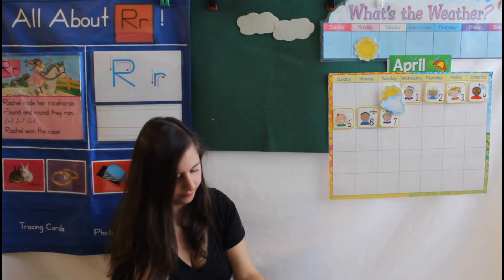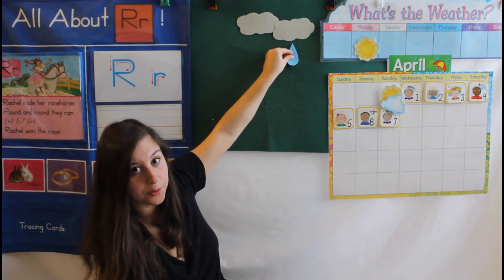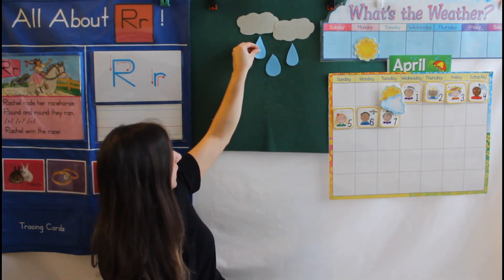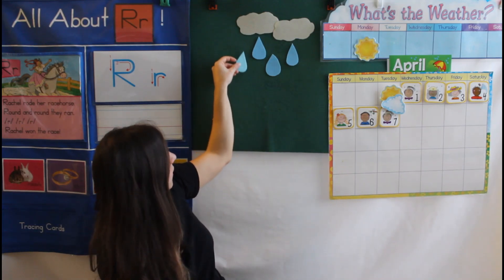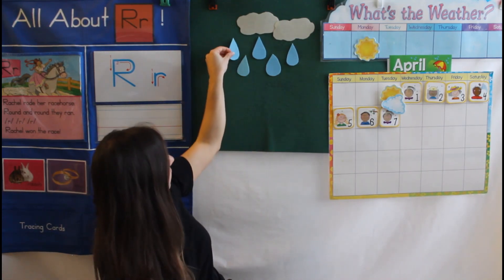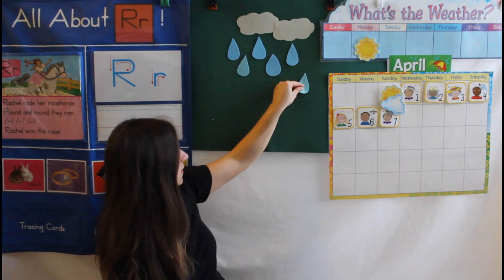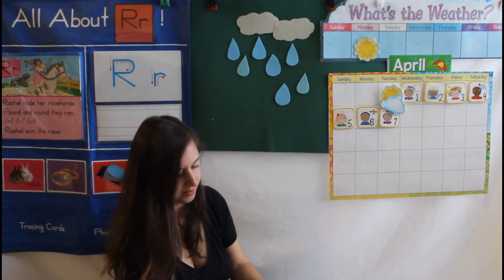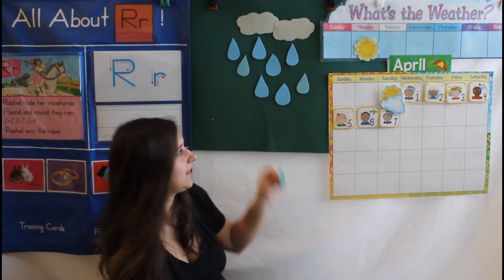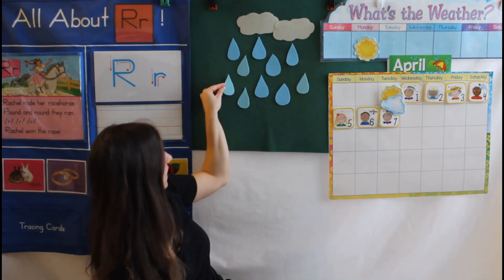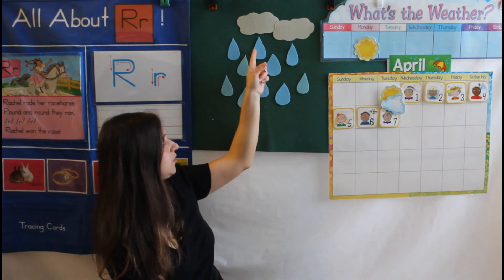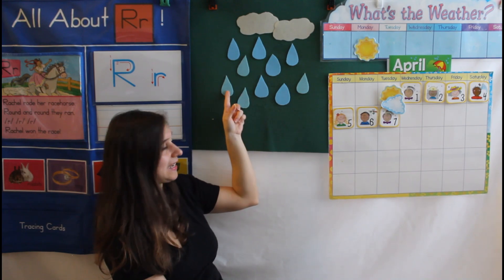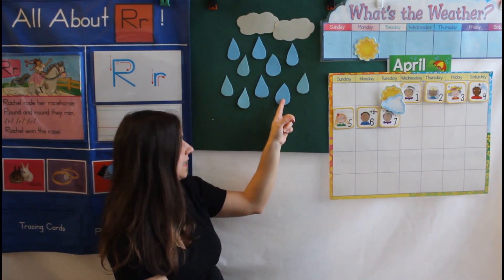Let's see how many raindrops we have all together. Are you ready? Let's count together. One, two, three, four, five, six, seven, eight, nine, ten. Great job. One, two, three, four, five, six, seven, eight, nine, ten.